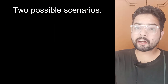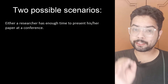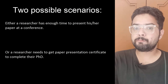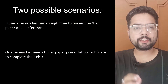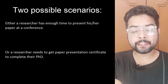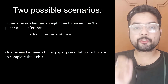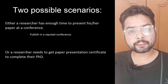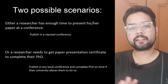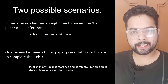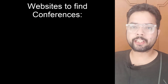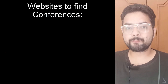There are two scenarios. Either a researcher has enough time to present their work at a conference, or a researcher needs to get a publication done in order to complete their PhD. If a researcher has enough time, it is recommended to publish in a reputed conference. Otherwise, the researcher can publish in any local conference, get their presentation certificate, and complete their PhD on time if their university allows them to do so.